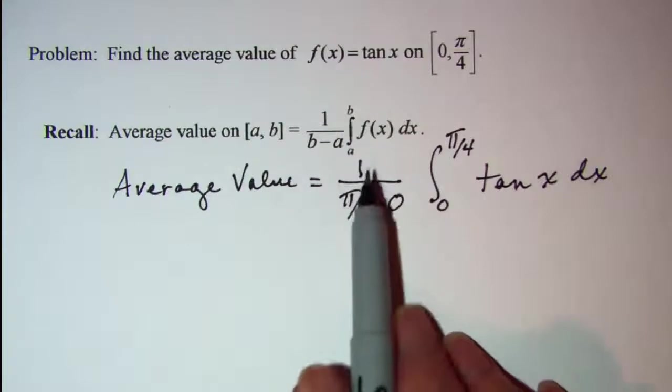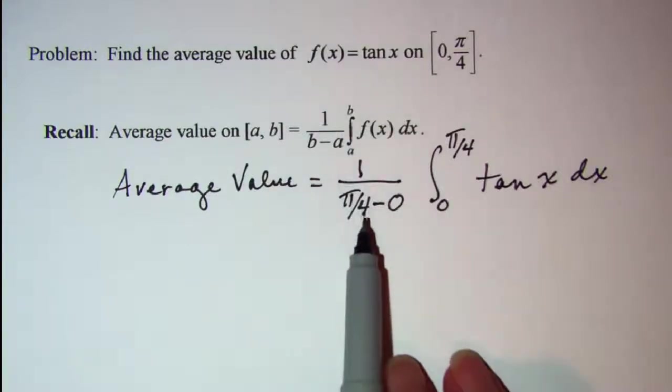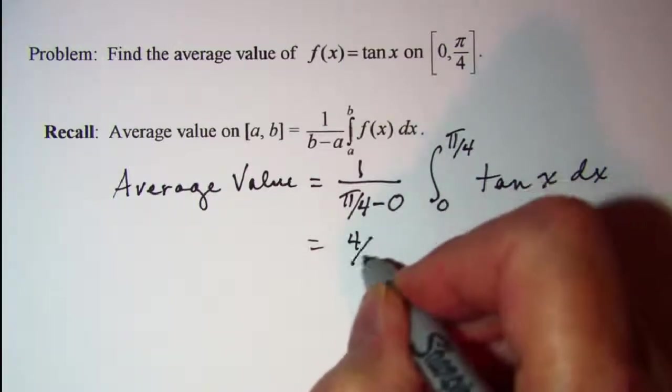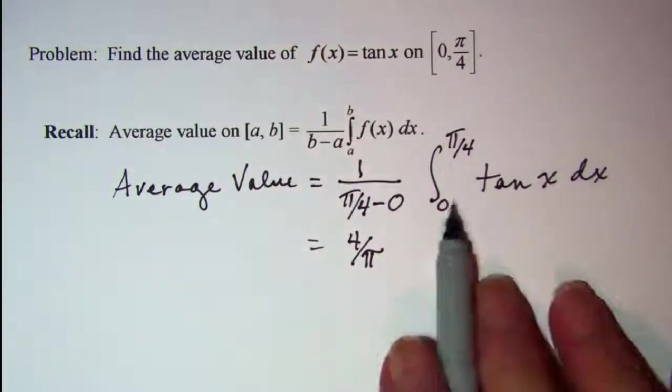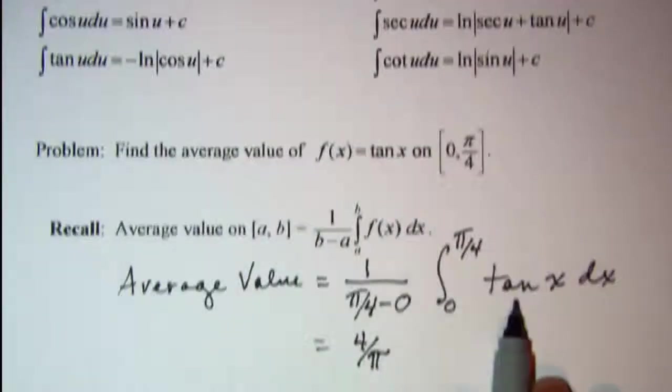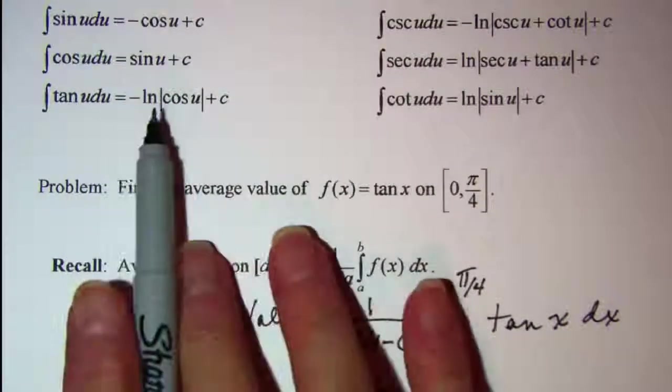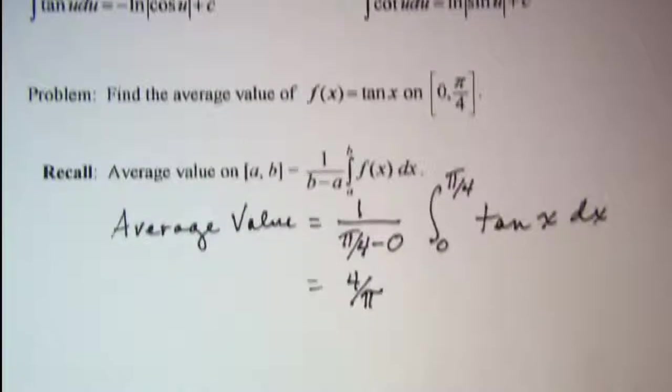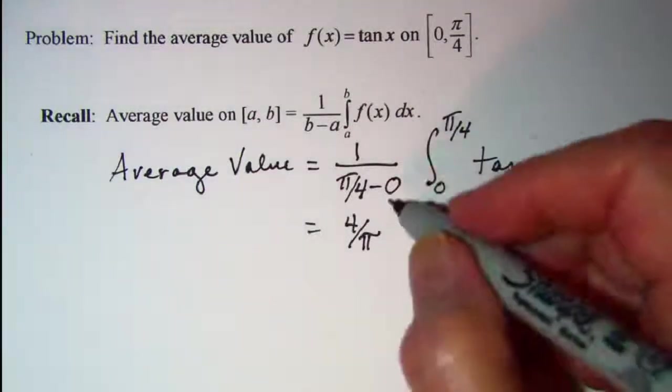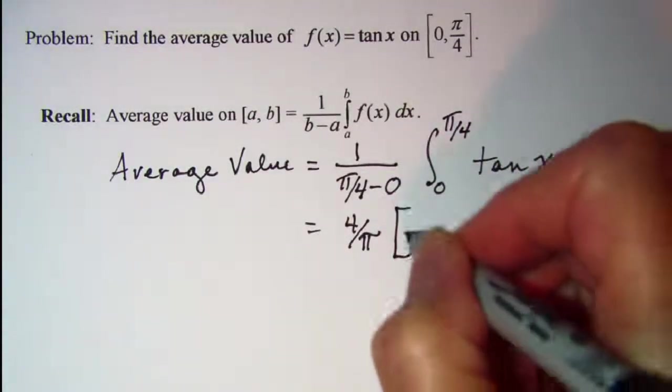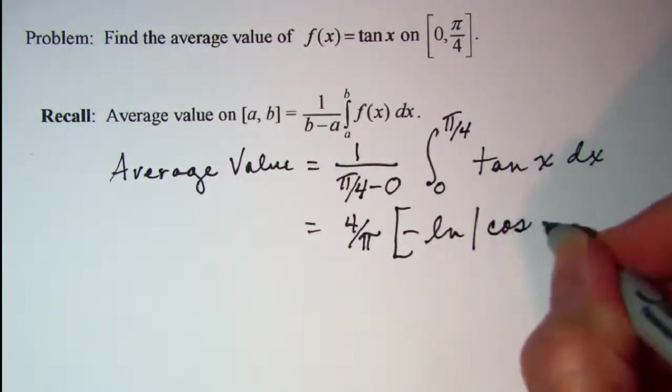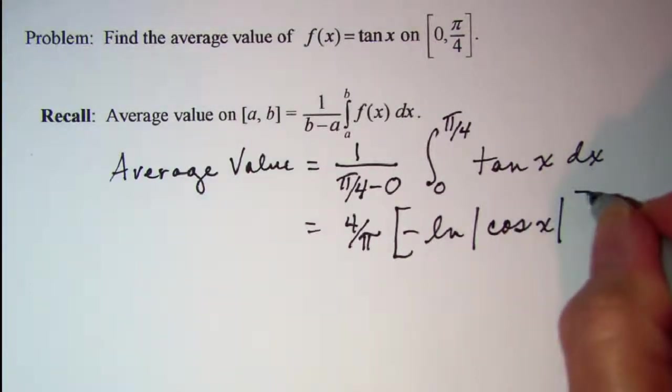Now this is the same as 1 over pi over 4, which is just 4 over pi, and then our integral of tangent we know is the negative ln of the absolute value of cosine x. So this is negative ln absolute value cosine x, and we are evaluating from 0 to pi over 4.